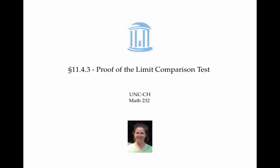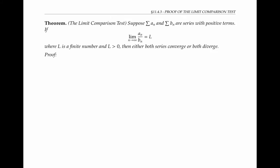In this video, I'll prove that the limit comparison test works. The limit comparison test says that if the sum of the a sub n's and the sum of the b sub n's are two series with positive terms, and if the limit as n goes to infinity of the ratio a sub n over b sub n is equal to L, where L is a finite number that's bigger than zero, then either both series converge or both series diverge.